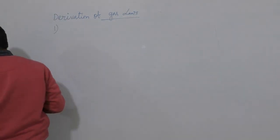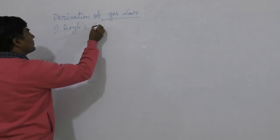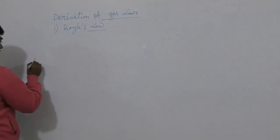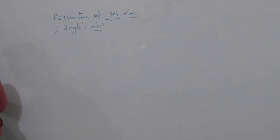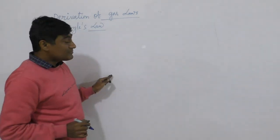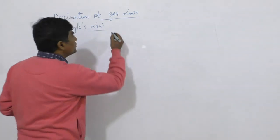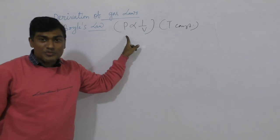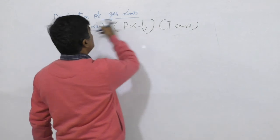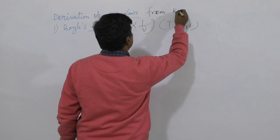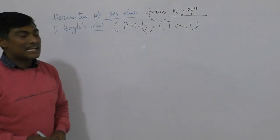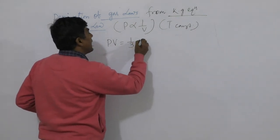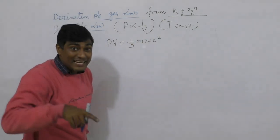The first derivation is Boyle's law. In Boyle's law we have to prove that pressure is inversely proportional to volume at constant temperature. We will derive this from the kinetic gas equation. We know PV is equal to 1 by 3 MNc̄².